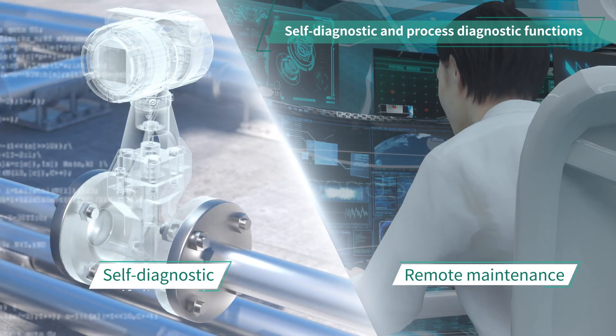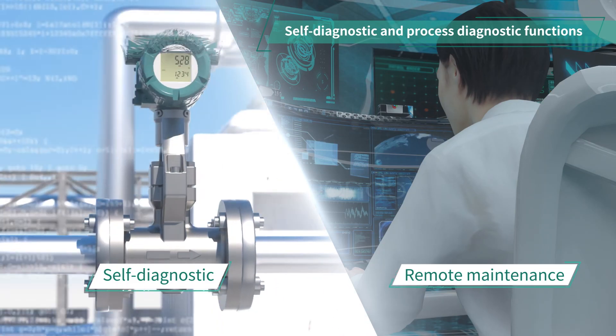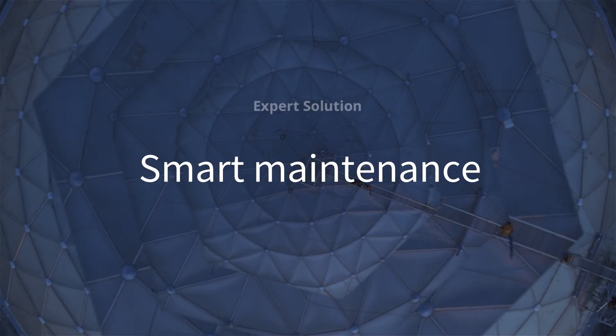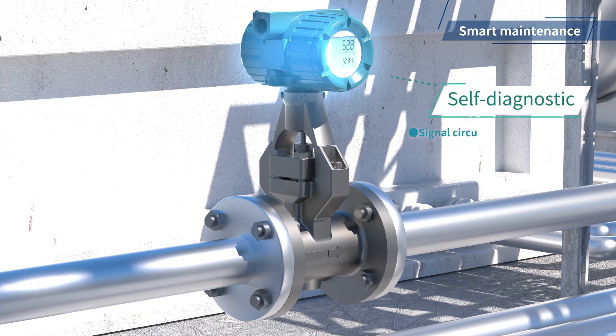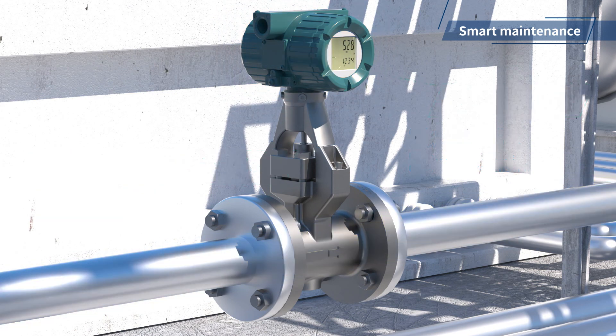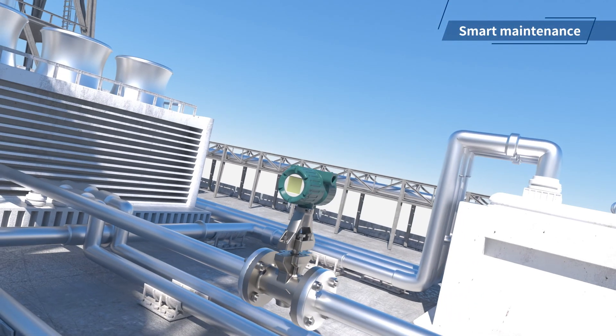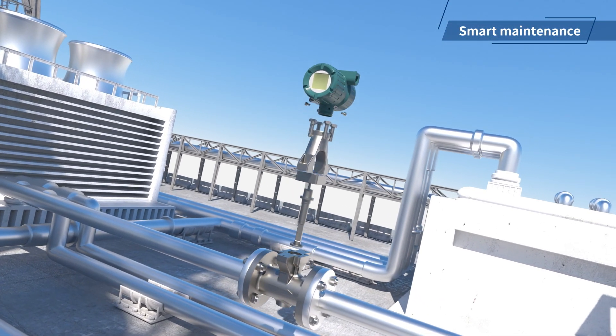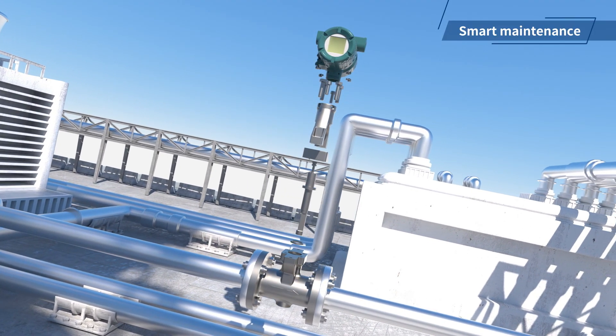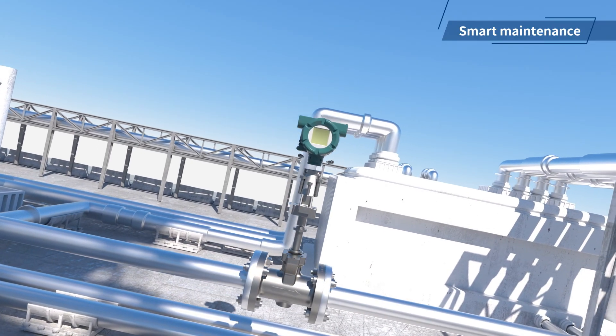Enhanced self-diagnosis and remote maintenance functions support efficient and planned plant operations. Self-diagnostic and process diagnostic functions help identify areas in need of maintenance. The unique structure allows easy maintenance of the flow tube since only the shutter bar can be removed. This reduces the need to remove the entire flow meter from the piping, reducing downtime.